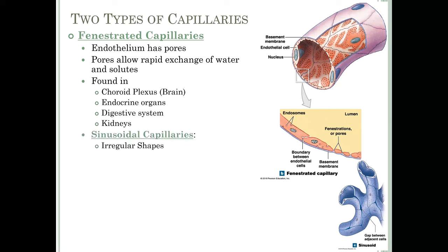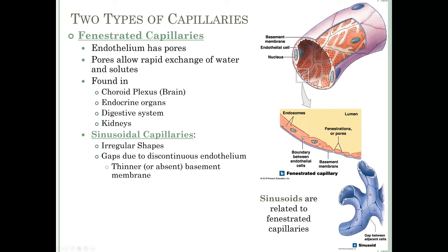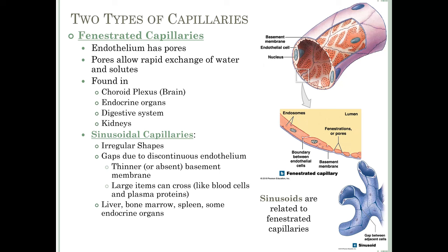There is a special type of fenestrated capillary called a sinusoidal capillary, shown at the bottom right. These have very irregular shapes and, like fenestrated capillaries, have pores in the endothelial cells. What makes sinusoids different is that they also have gaps between cells — a discontinuous endothelium — and a thinner basement membrane, sometimes no basement membrane at all. These large gaps allow blood cells and plasma proteins to cross. Sinusoidal capillaries are found in the liver, bone marrow, spleen, and some endocrine organs.